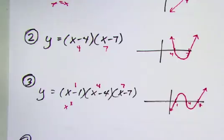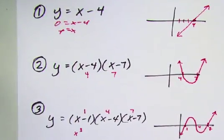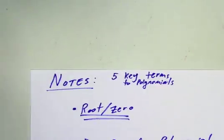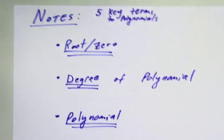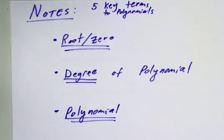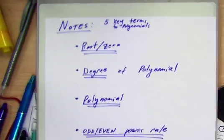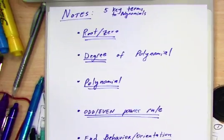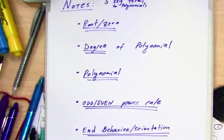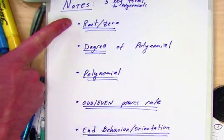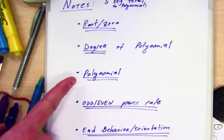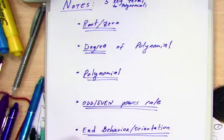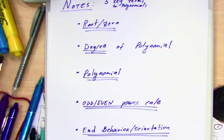There are five key terms that you have to understand in order to do this — five key terms in the study of polynomials. I'd like you to take a second to write these down, and we're going to be defining them as we go. The five key terms are: root and zero, degree, polynomial, odd/even rule, and end behavior or orientation.